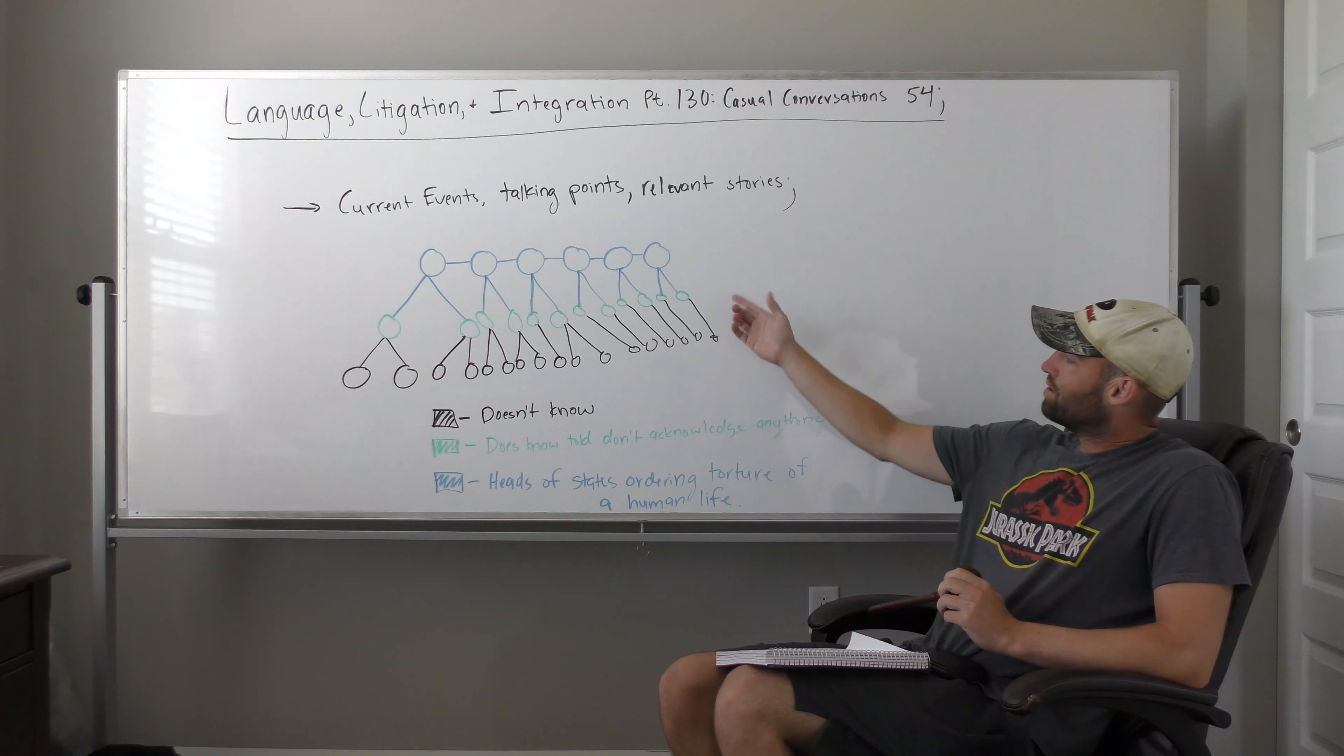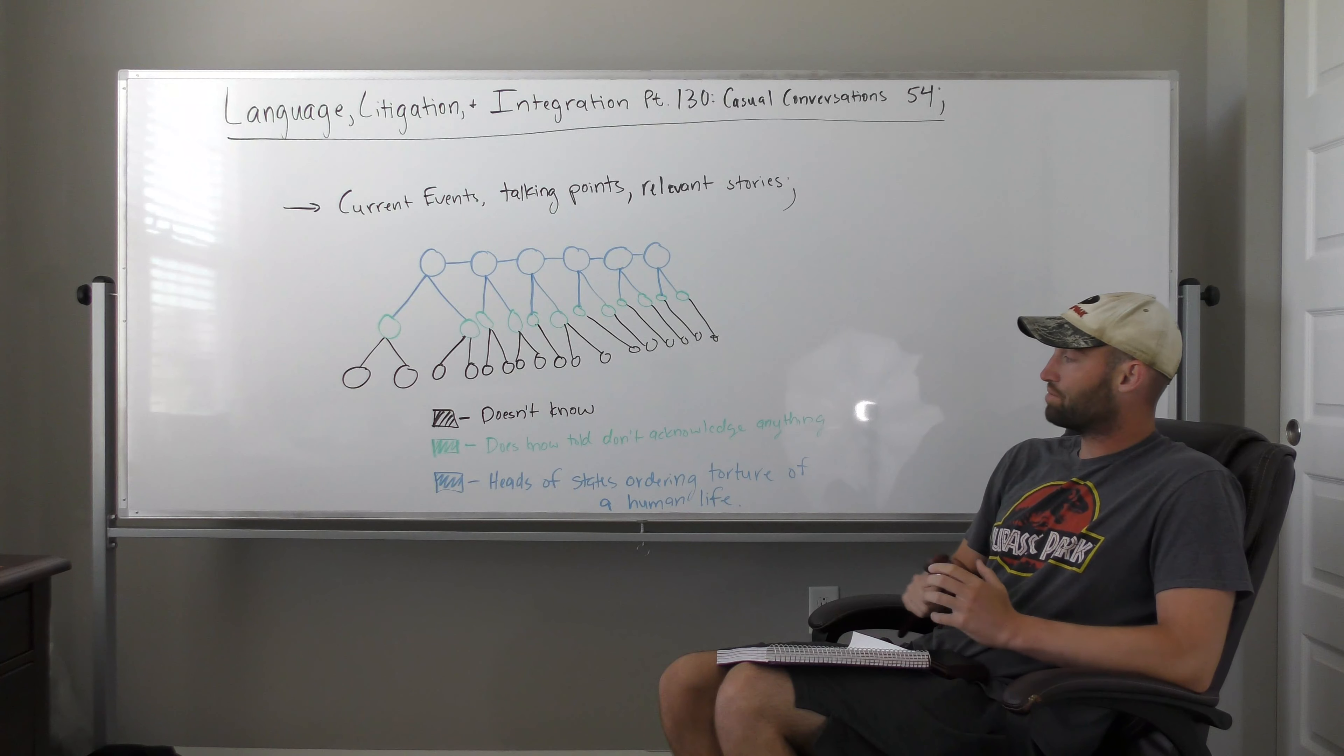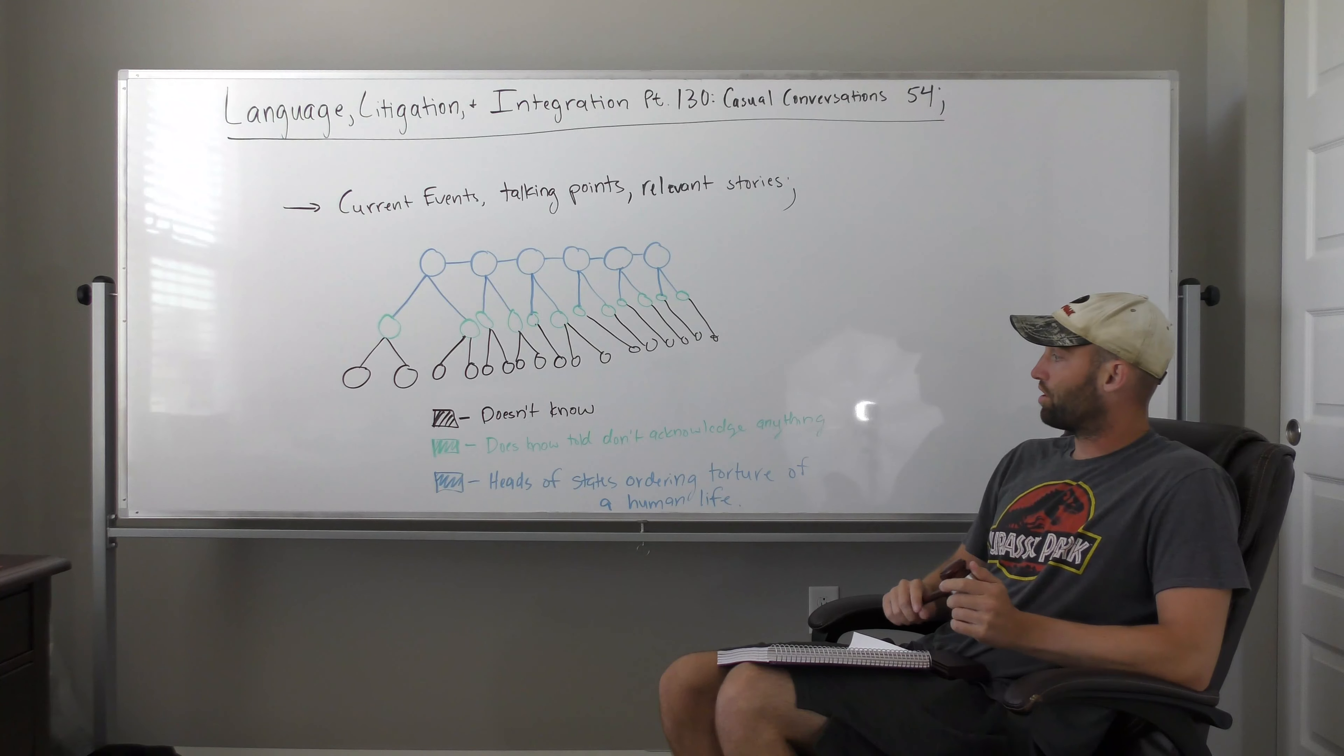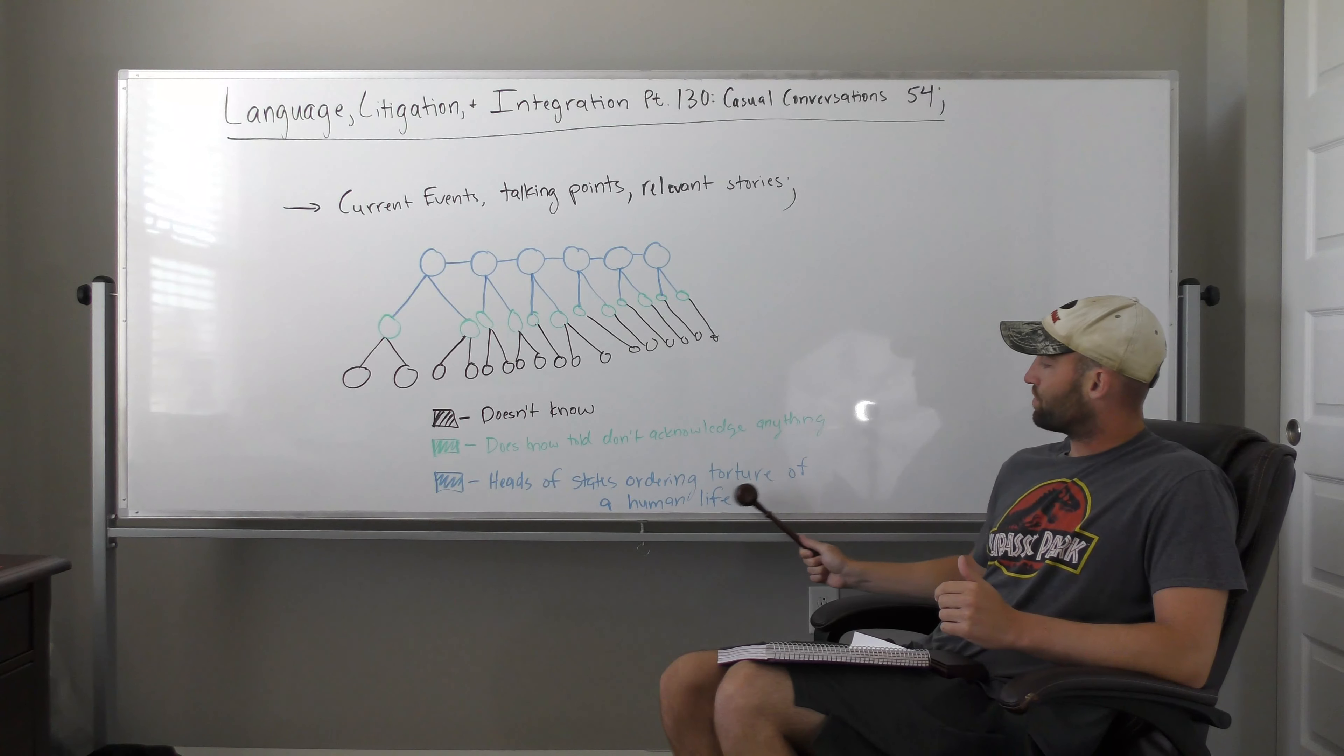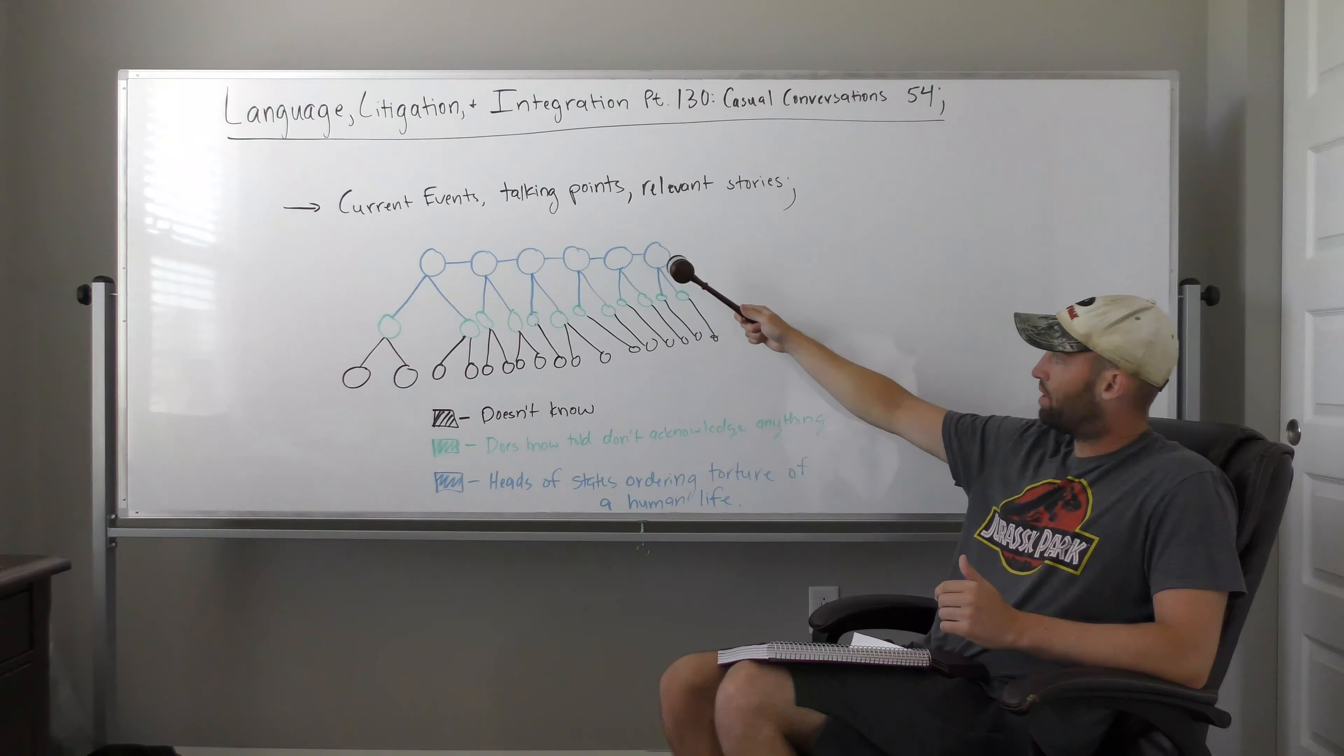Obviously, my geometry is not too good. It's supposed to be just like those multiplying charts where the top level has two and then each two has three. But obviously, I didn't line it up too well. At the top level, we have the heads of states ordering torture of a human life. That's me. And this is everybody saying, Eric Weinstein, direct quote on Lex Friedman's podcast, if you say this directly, you'll go to jail. These people must die for treason. Must die for fucking treason.